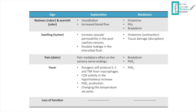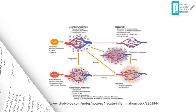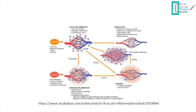Fever is caused by prostaglandin E2. Pyrogens — produced when microbes stimulate IL-1 and TNF from macrophages — increase COX activity in the hypothalamus, leading to prostaglandin E2 production. Finally, loss of function results from the combination of all the previous signs.